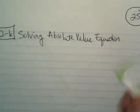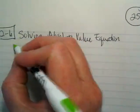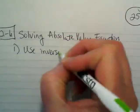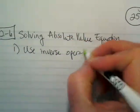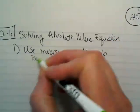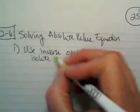There are three steps we need to take to solve absolute value equations. One, we use inverse operations to isolate the absolute value.